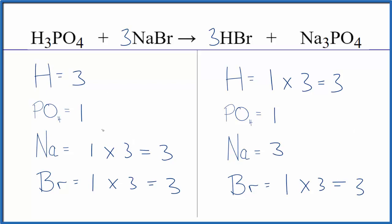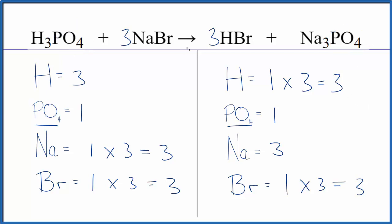You can see the utility of counting the phosphate as one thing, because it appears on both sides — that makes the balancing a lot easier. I would note that all of the substances here would be aqueous. However, this phosphoric acid is a weak acid, so it would only partially dissociate into its ions.